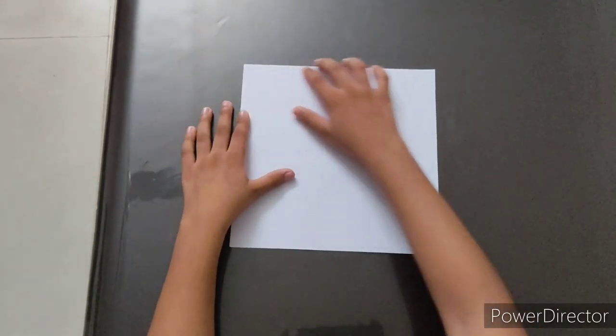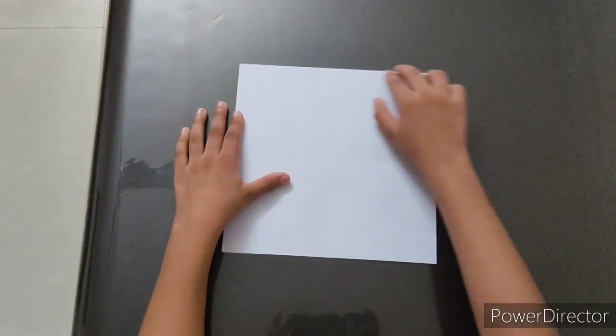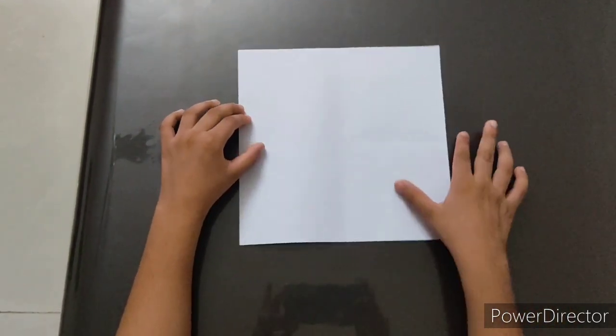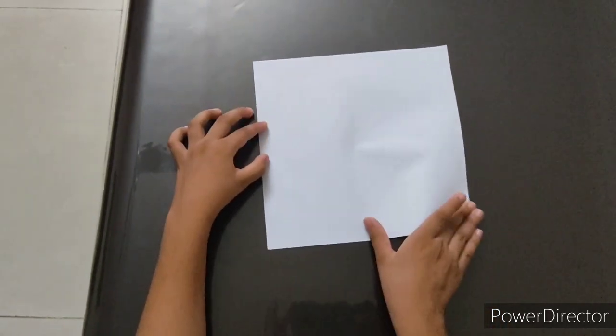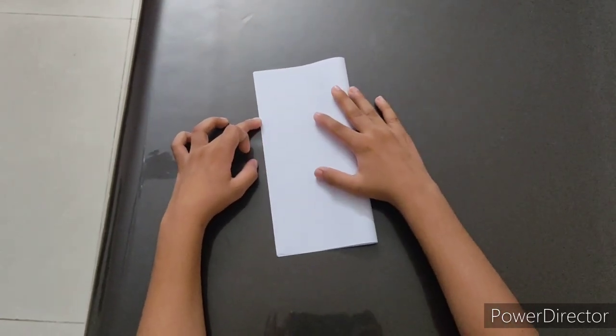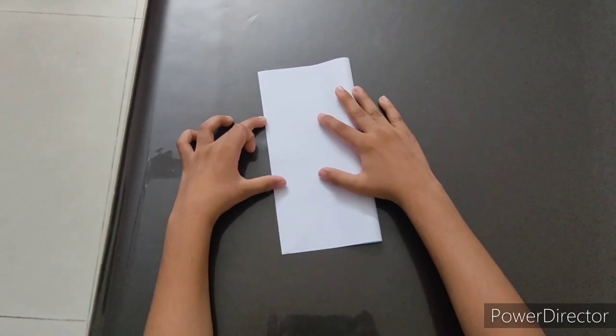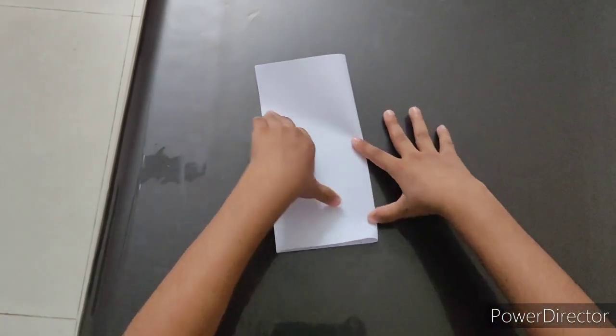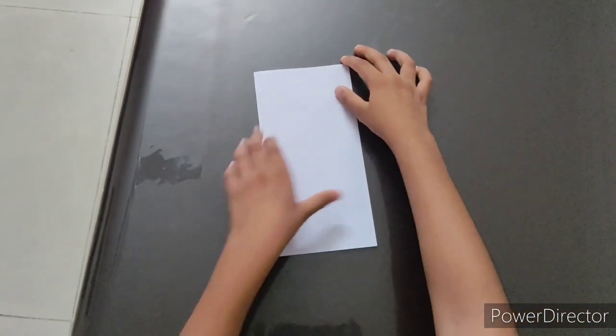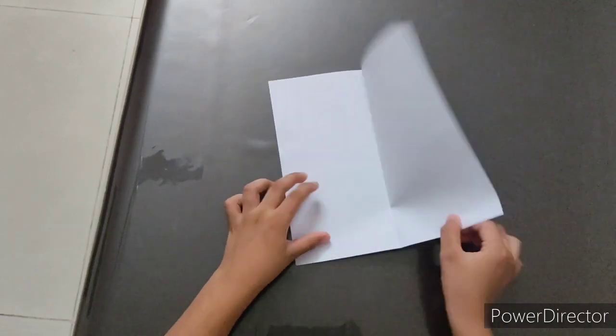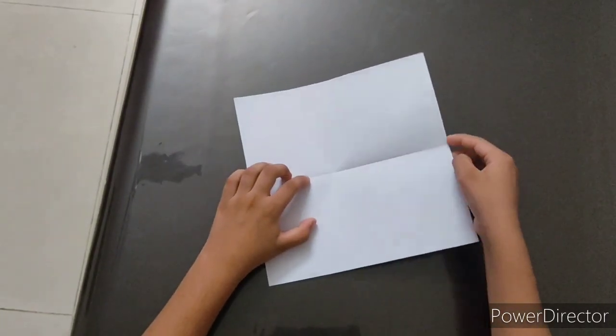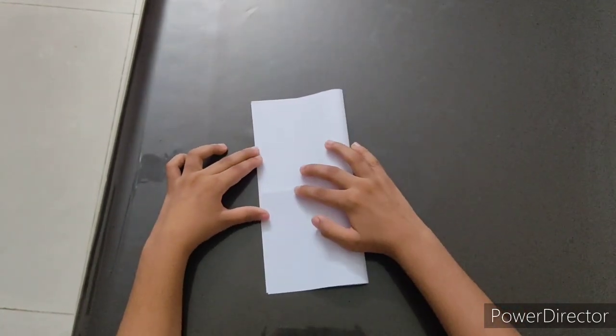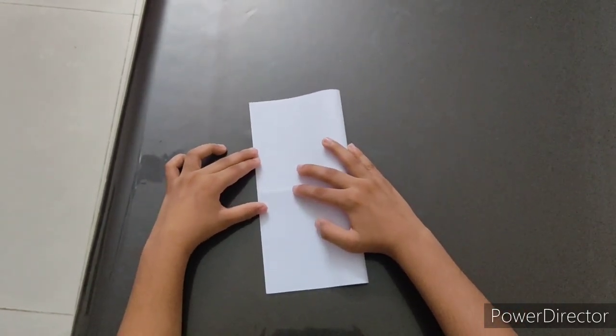I am using a square A4 sheet of 21 centimeters. Now, first fold this edge till here so that you divide it into halves. You have to make really precise folds. Now, open.